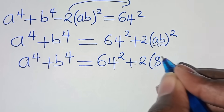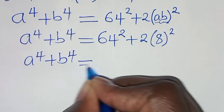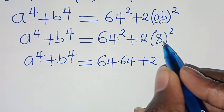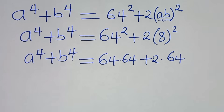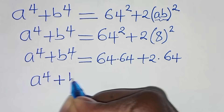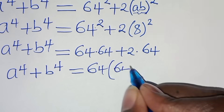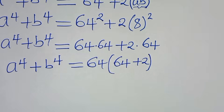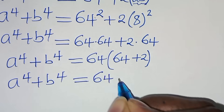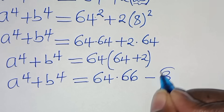So we have 8 raised to the power of 2. Then a to the power of 4 plus b to the power of 4 equals 64 times 64, plus 2 times 8 squared, which equals 64. Since 64 is common, we factor out 64, giving a to the power of 4 plus b to the power of 4 equals 64 times (64 plus 2), which is 64 times 66. Let's call this equation 3.